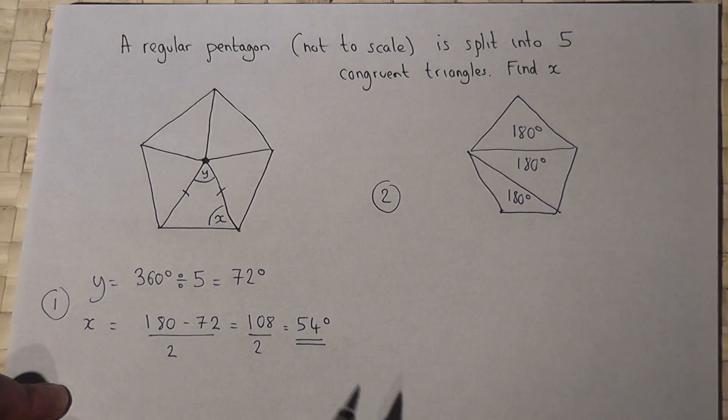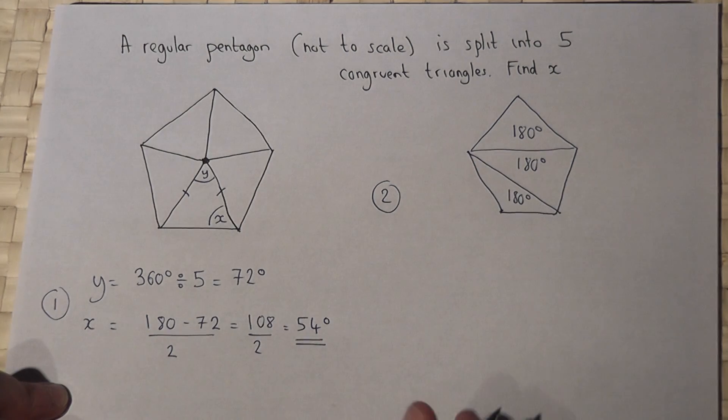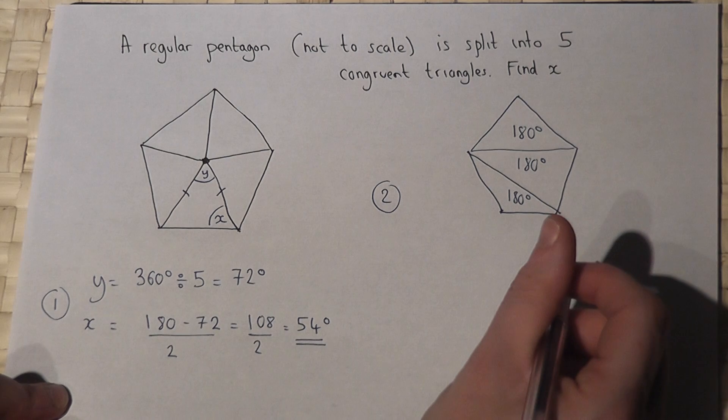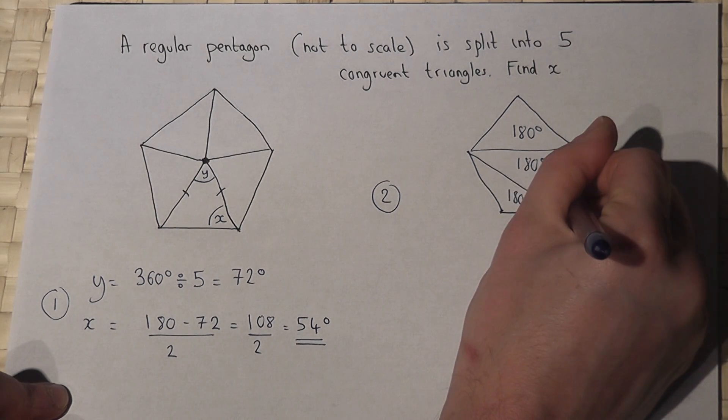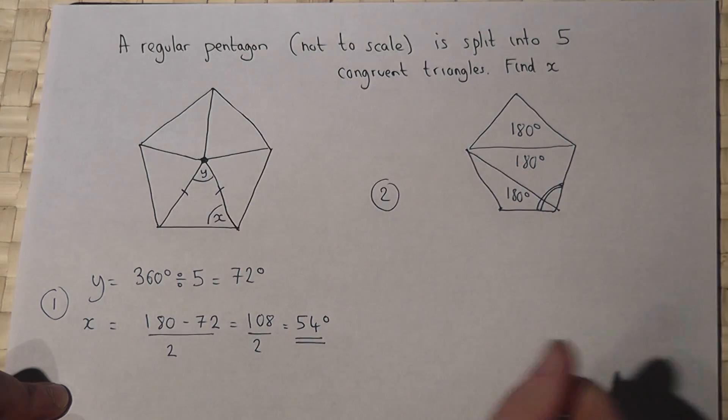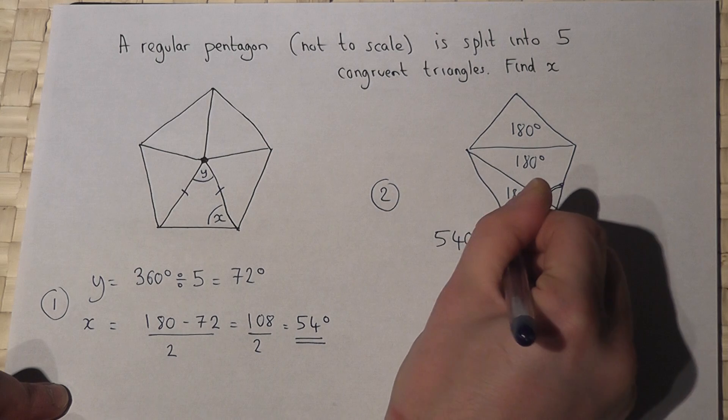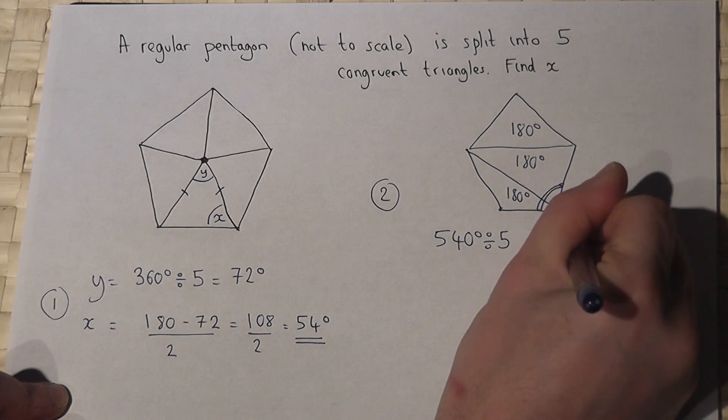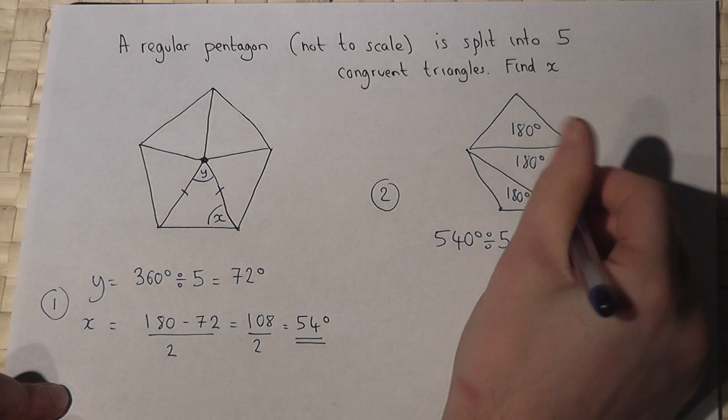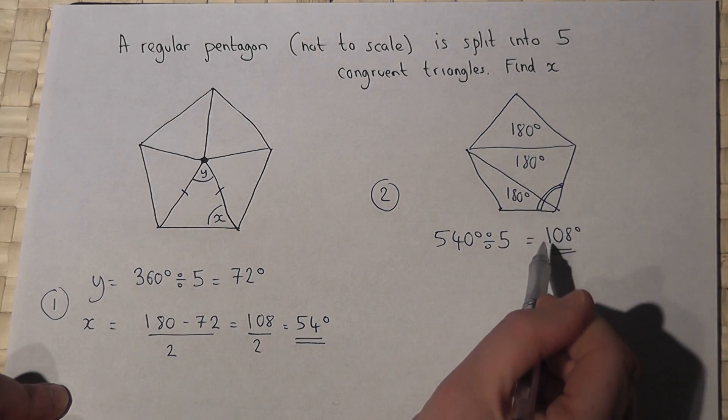So I know that the sum of all the angles in a pentagon must equal 540 degrees. So I can find the size of one of the interior angles by doing 540 degrees divided by 5 which is 108 degrees. So one of these interior angles has a value of 108 degrees.